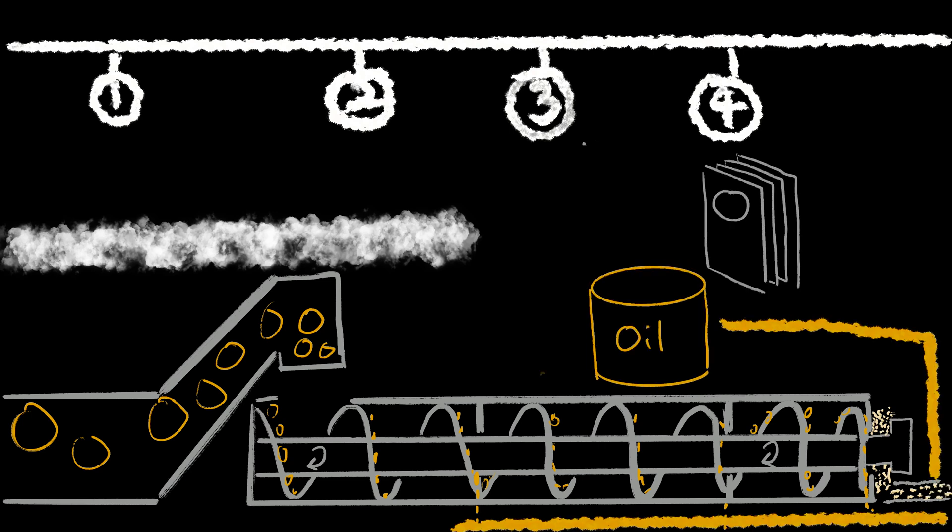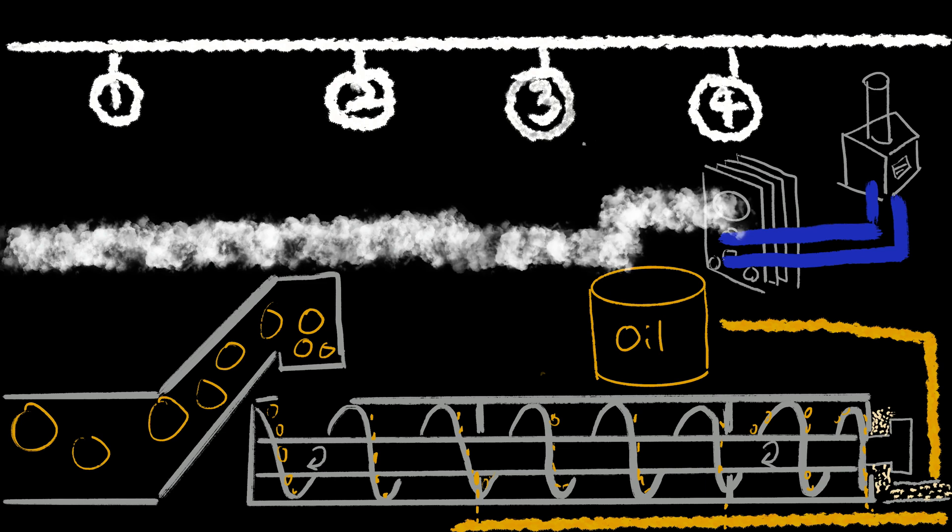The steam will enter a condenser where it uses water from the cooling tower to condense the steam, so it could be used again. This is the process of making soybean oil.